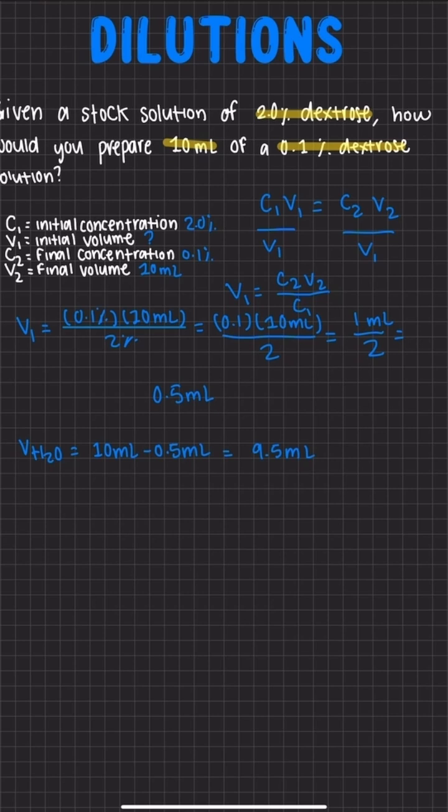And the way that we're going to read this is that we are going to need 0.5 milliliters of stock solution and 9.5 milliliters of water in order to create a 0.5% dextrose solution with a total volume of 10 milliliters.